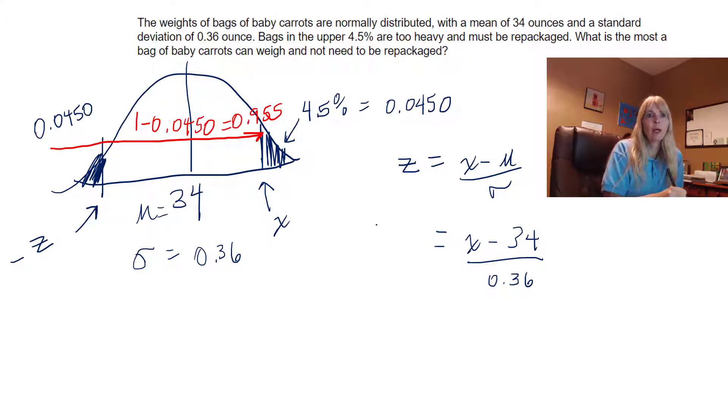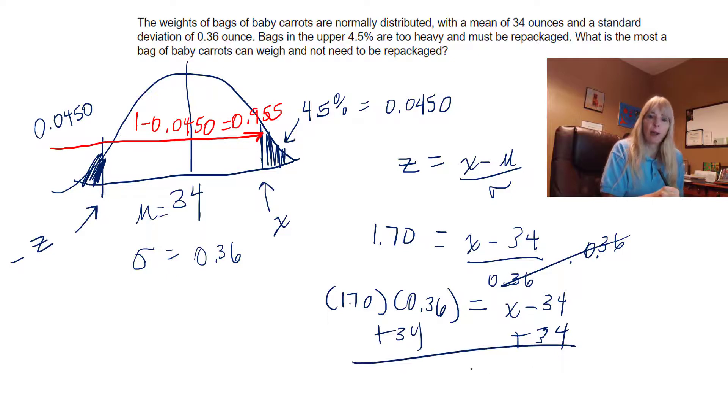So now we know Z is 1.70, based off of the probability. We go back to those algebra days and you solve this for X by multiplying both sides by 0.36, why? Because that cancels, right. Oops, I got my decimal in the wrong place, so I get that. And then finally I would add 34 to both sides, and when I multiply and add 34, I get 34.61 rounded to two decimal places, which makes sense because it should be bigger than 34, right? And so that X value would be 34.61.